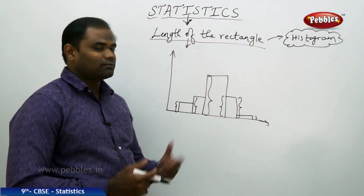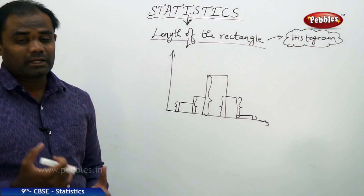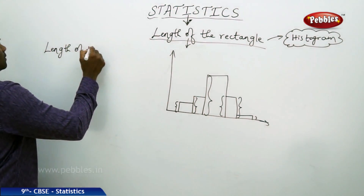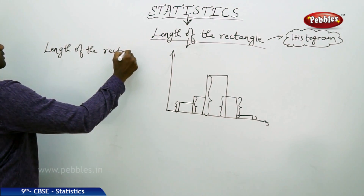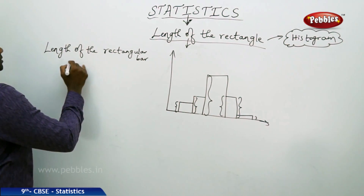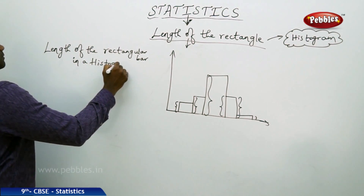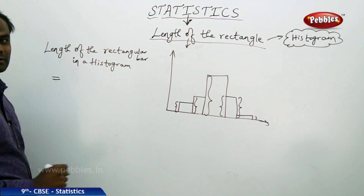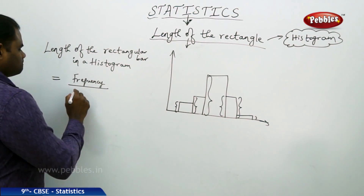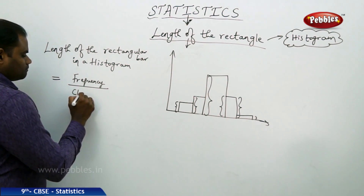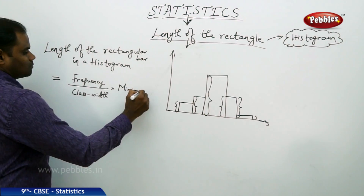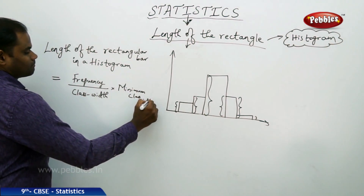This session is about finding the length of the rectangle given the frequency, the class interval, and the class width. We have a formula which says the length of the rectangle bar in a histogram is given by: frequency divided by class width, multiplied by minimum class width.